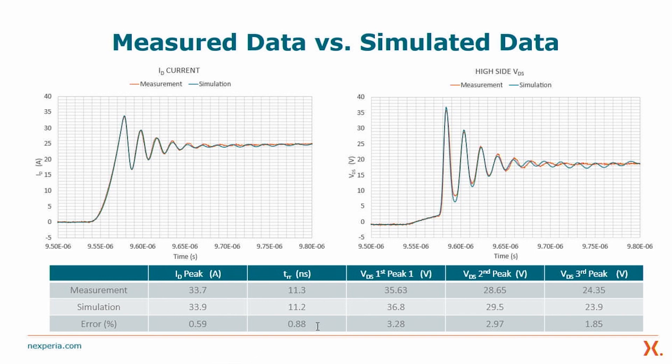If we go to the high side VDS waveforms and look at the errors on the first three peaks, we have less than 3.5% error on the first peak, less than 3% on the second peak, and less than 2% on the third peak. In both waveforms, the frequency of the oscillation is very well matched, as well as the damping of the oscillation.